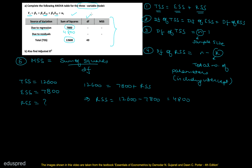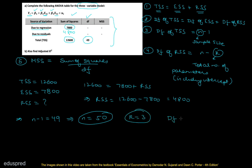Now let's move to the degrees of freedom column. The degrees of freedom of TSS equals n minus 1. We are given that degrees of freedom of TSS is 49, so n minus 1 equals 49, which means n equals 50. The degrees of freedom of RSS equals n minus k, where k is the total number of parameters including the intercept. In our three-variable model we have three parameters — beta 1, beta 2, and beta 3 — so k equals 3. Therefore degrees of freedom of RSS equals 50 minus 3, which is 47.